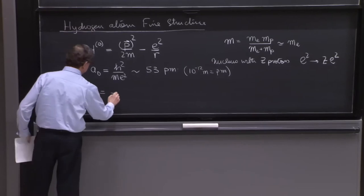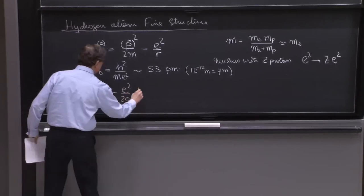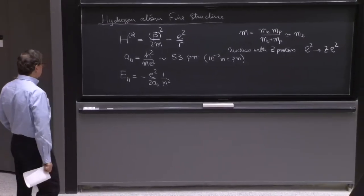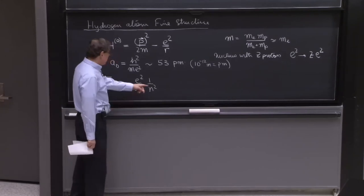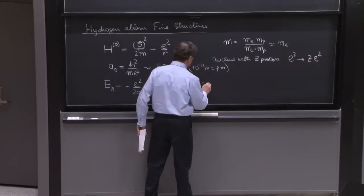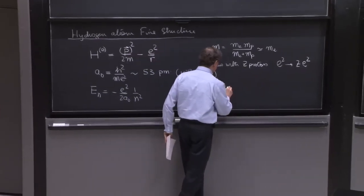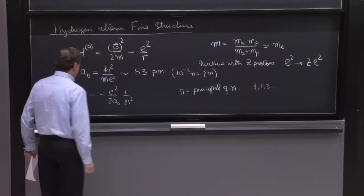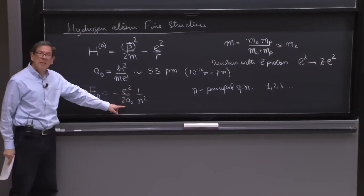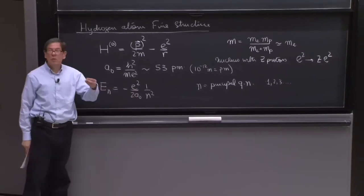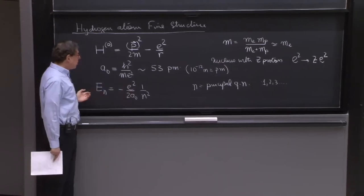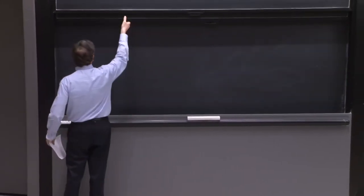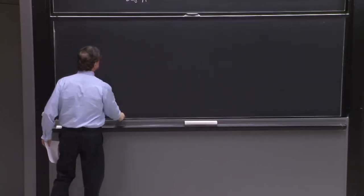The energy levels are given by minus e² over 2a₀, 1 over n². This is a beautiful formula in terms of quantities that you understand. First, the energy just depends on n. And this 1 over n². n is called the principal quantum number and it goes from 1 up to infinity. This has units of energy. For the ground state of hydrogen, n equal 1, that energy is about minus 13.6 eV.